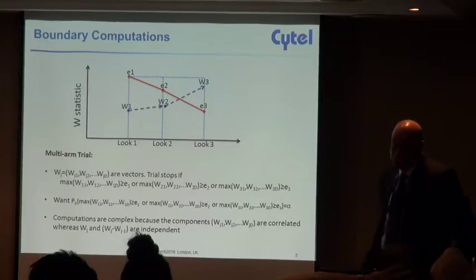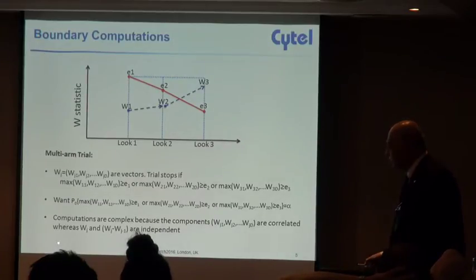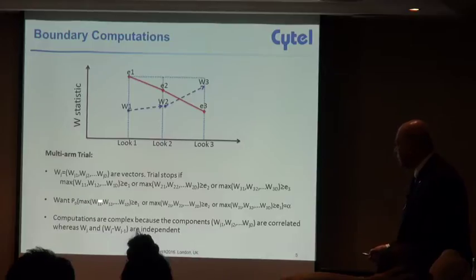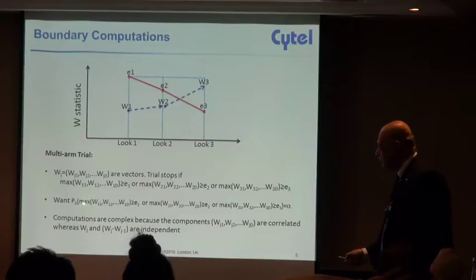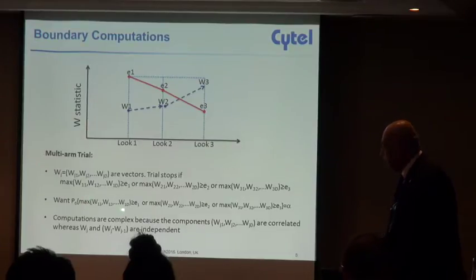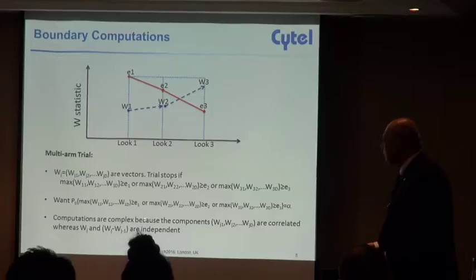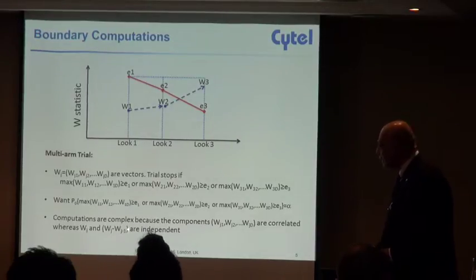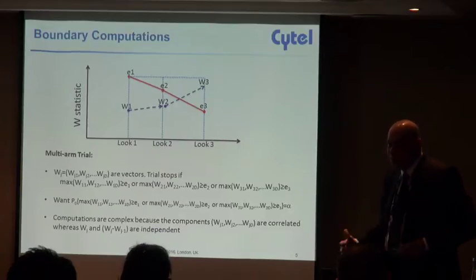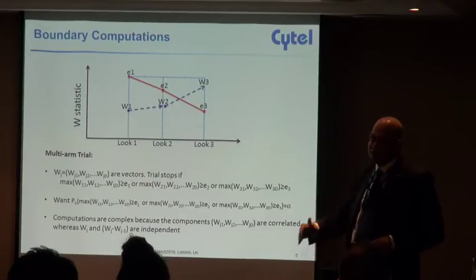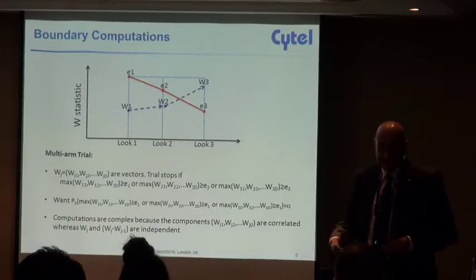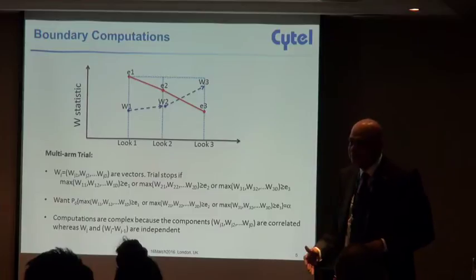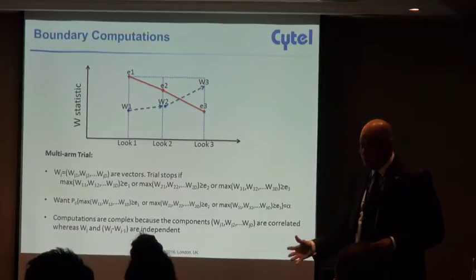Similarly the third stage, and you want this to be alpha. Now the computations get complex because these W's are correlated, but there's no independent increment property when you deal with the max. On the other hand, there is one redeeming feature: the vector WJ and its independent increment are independent. So you have independent increments across stages but within a stage you don't have independent increments.